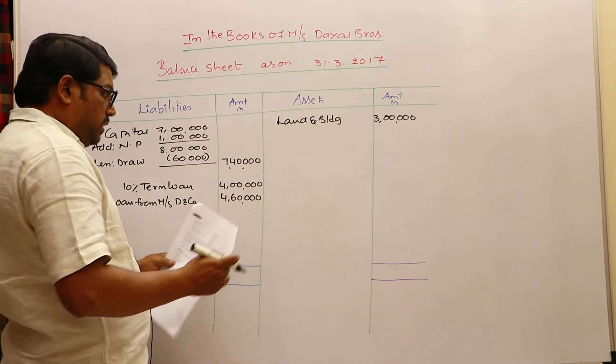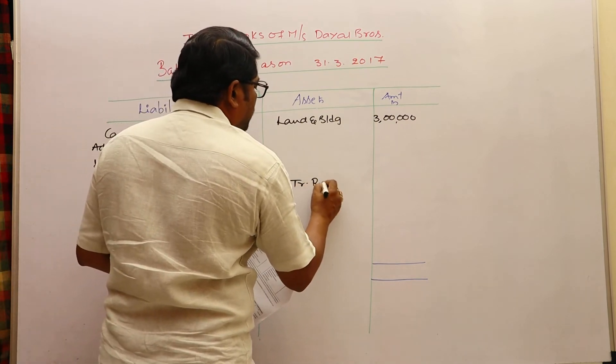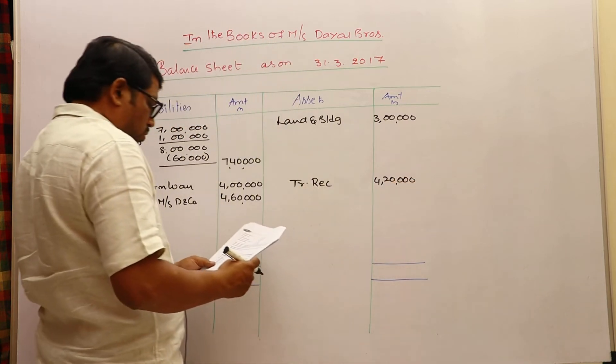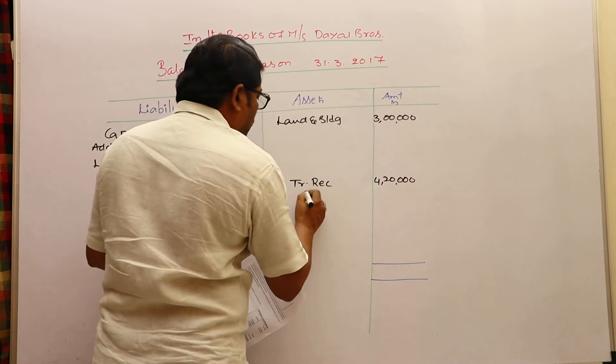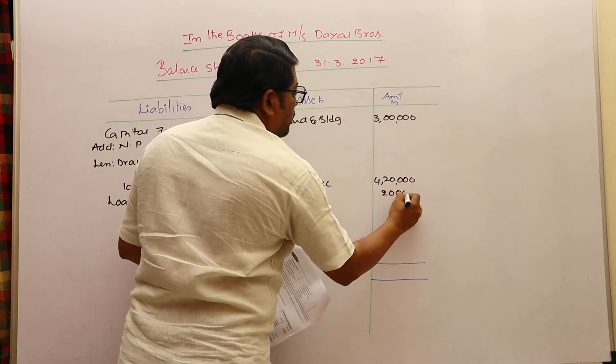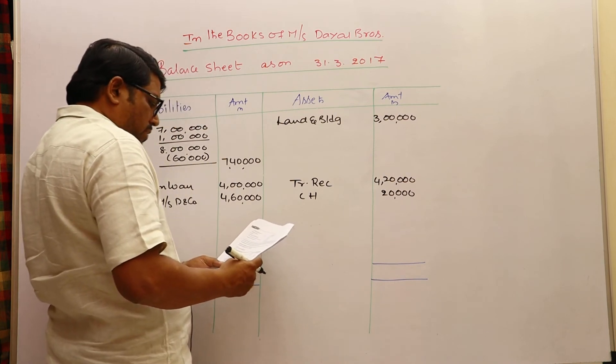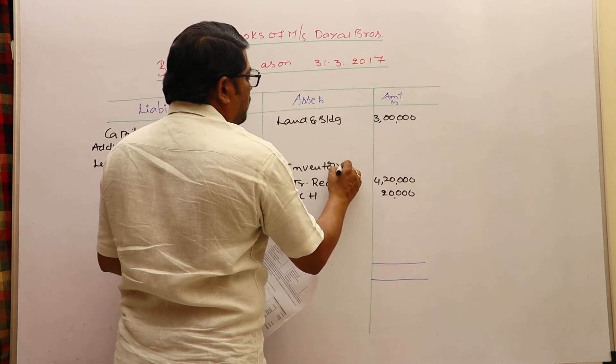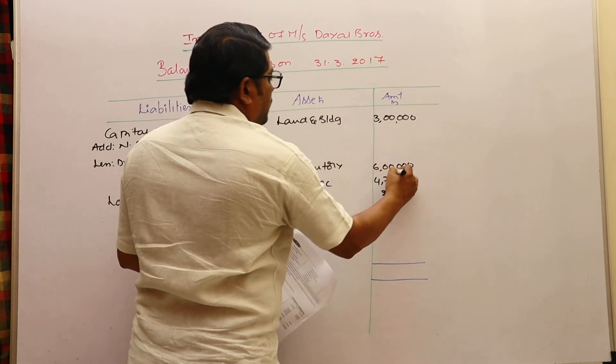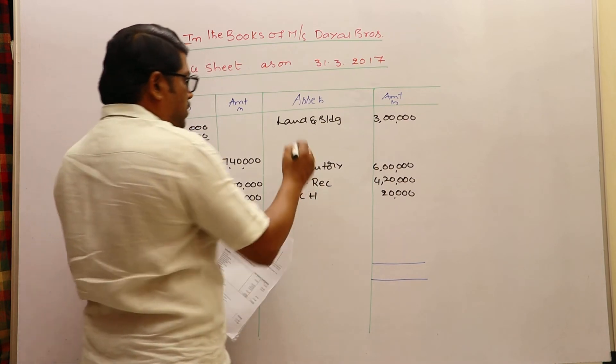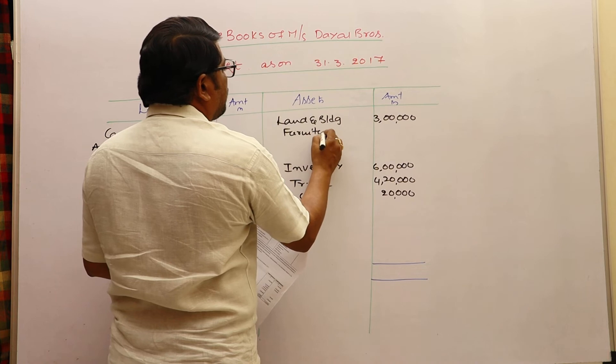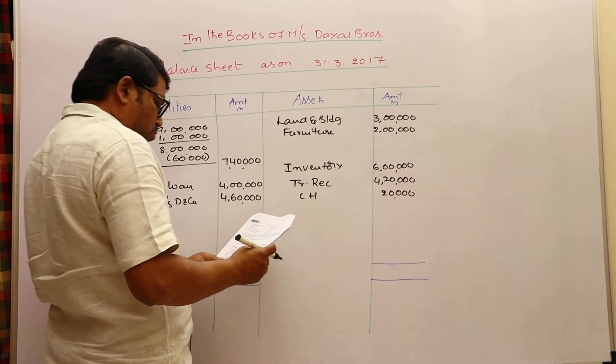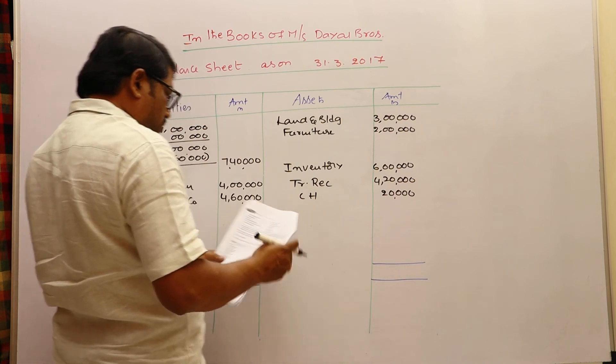Trade receivable, current asset, four lakhs twenty thousand. Cash in hand, current asset, twenty thousand. Inventory, current asset, six lakhs. Furniture, fixed asset, two lakhs. Trade payable, current liability, forty thousand.